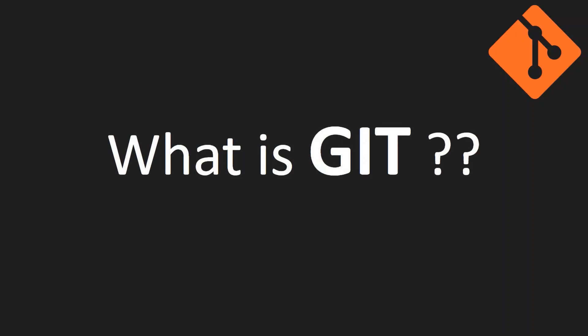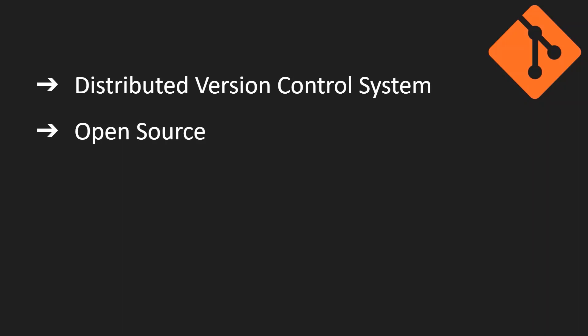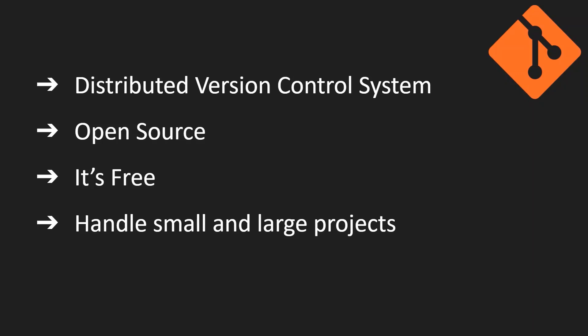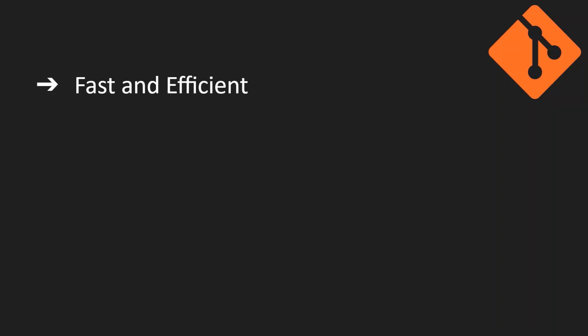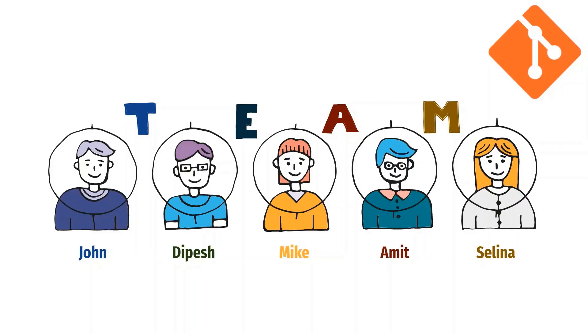Let's start with a very basic question: what is git? It is a distributed version control system that helps us manage different versions of the same file for later use. It is an open source system, so it's free to use. It really helps in handling projects irrespective of complexity and size, works well with both small and large projects, and is fast, efficient, and very easy to learn — the best lightweight version control system available.